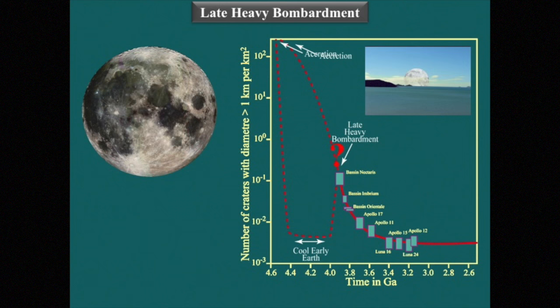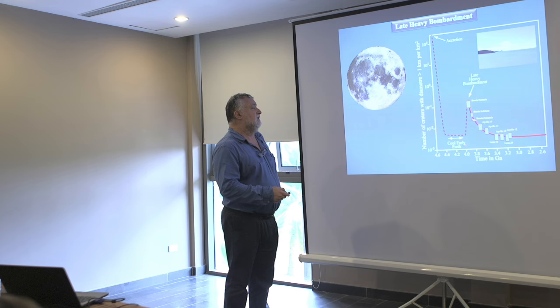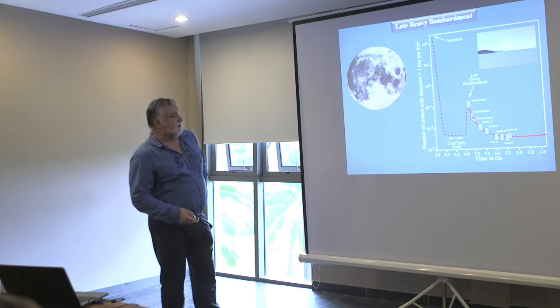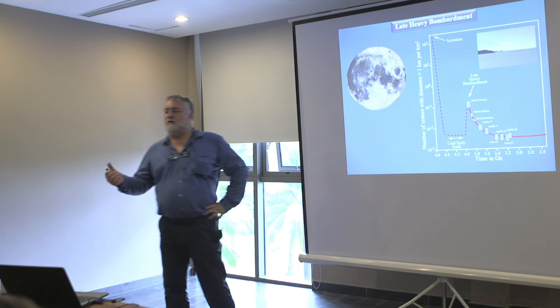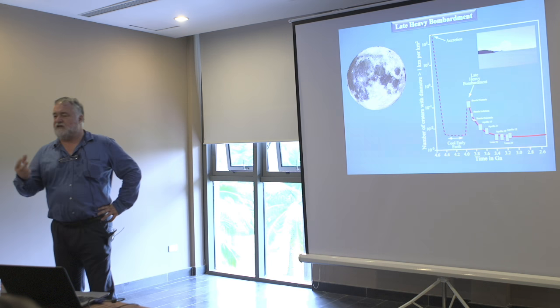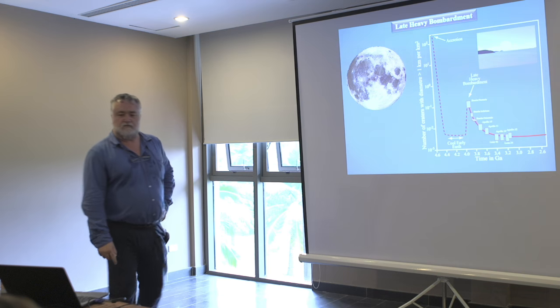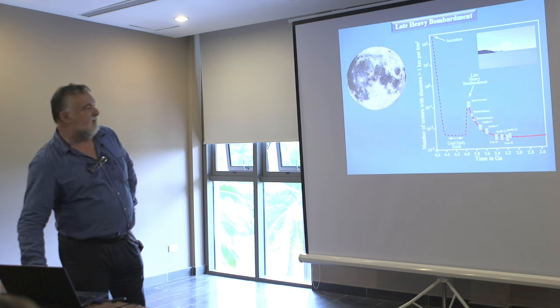The cool early Earth theory says that after accretion, the intensity of meteorite bombardment decreased extremely rapidly, and during the Hadean the intensity of bombardment was not very much more than during the Archean. Then there was a very short event — a few hundred million years — at around 4 billion years, which is the Late Heavy Bombardment. That means the Earth during the Hadean had oceans, continents, and not a very strong meteorite bombardment — so maybe life was potentially possible.